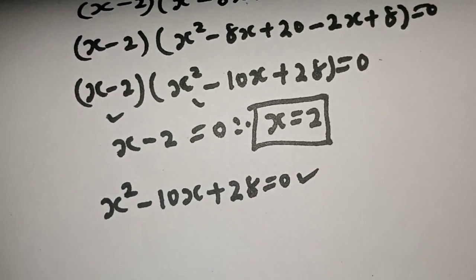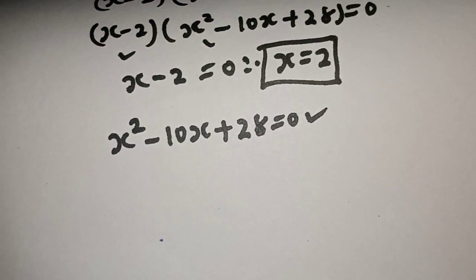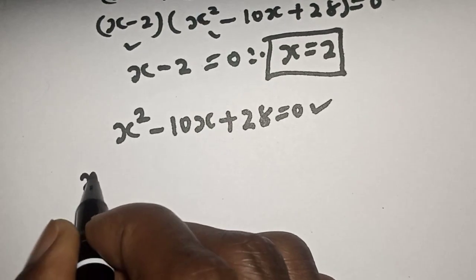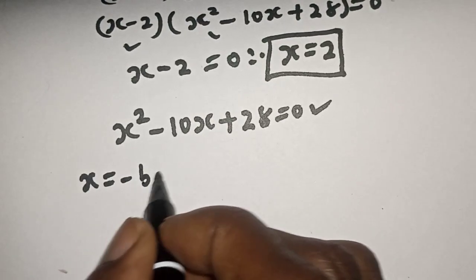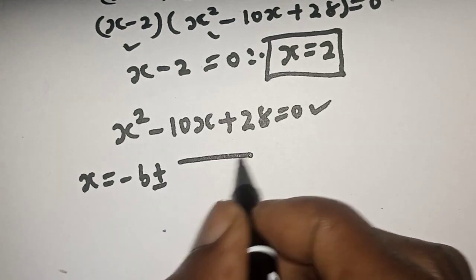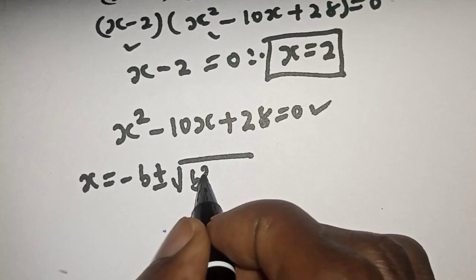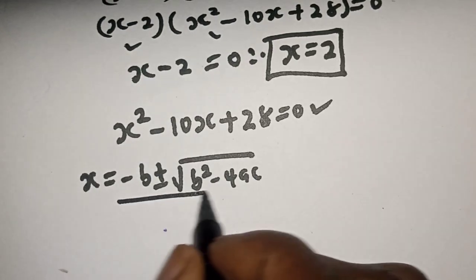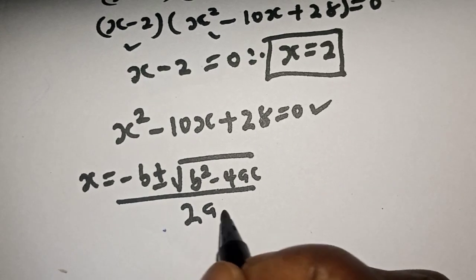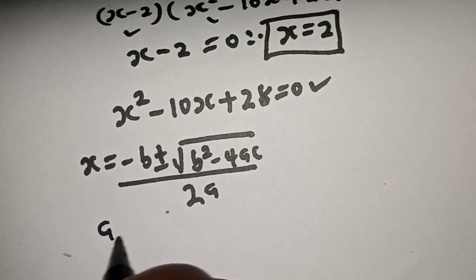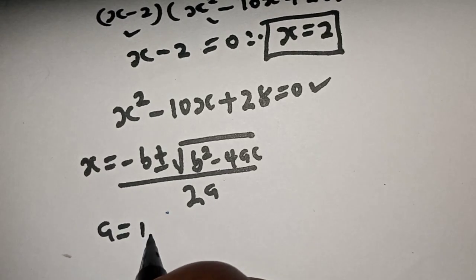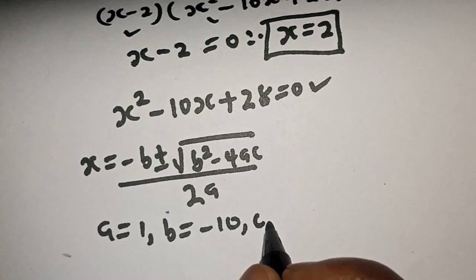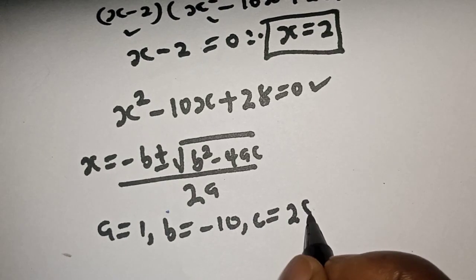This is a quadratic equation which can be solved using the quadratic general formula: x is equal to minus b plus or minus square root of b squared minus 4ac, over 2a. Here, a is equal to 1, b is equal to minus 10, c is equal to 28.